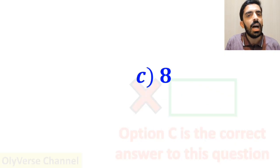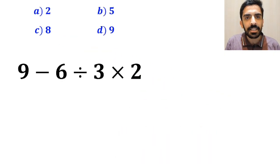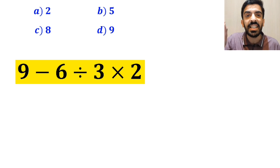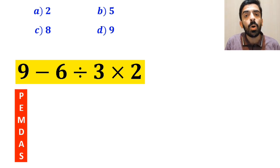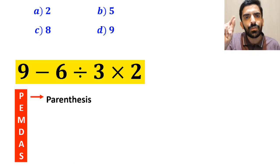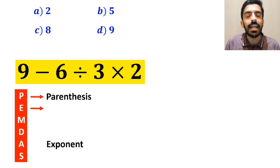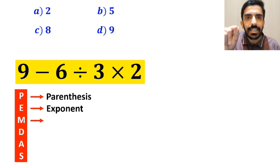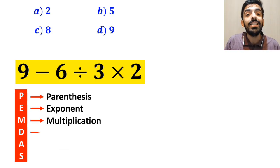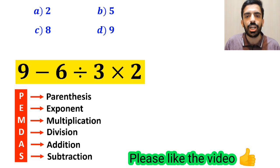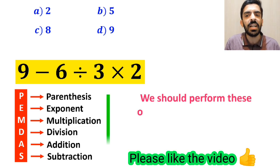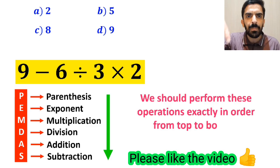All right, now let's go step by step together and I will show you how to solve this expression properly. To solve this problem, we must follow a rule that is called PEMDAS. P stands for Parentheses, E stands for Exponent, M stands for Multiplication, D stands for Division, A stands for Addition, and S stands for Subtraction. We should perform these operations exactly in order from top to bottom.